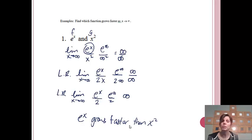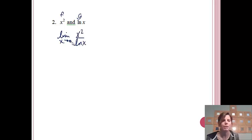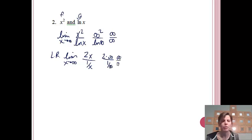An exponential function grows faster than a quadratic function — and now we've verified it using calculus. Next, let's compare x² and ln(x). We'll find the limit as x approaches infinity of x² over ln(x). Plugging in infinity gives infinity squared over ln(infinity), which is infinity over infinity — indeterminate, so we apply L'Hôpital's Rule. Taking derivatives, I get 2x over 1/x. Plugging in infinity gives 2 times infinity over 1/infinity, which gives infinity over 0 — that doesn't simplify nicely.